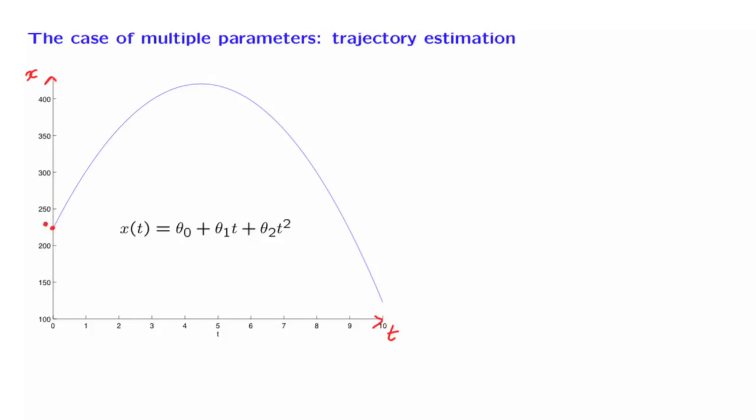The ball initially is at a certain location, at a certain height, theta 0. It is thrown upwards, and it starts moving with some initial velocity, theta 1. But because of the gravitational force, it will start eventually going down. So this parameter theta 2, which will actually be negative, reflects the gravitational constant.